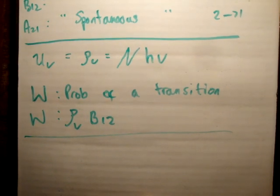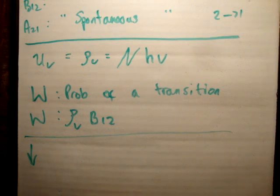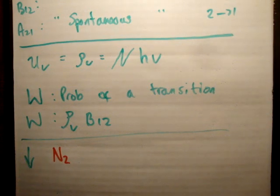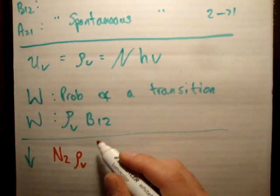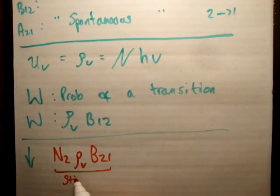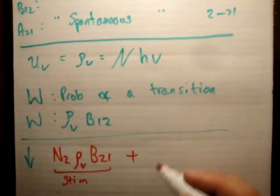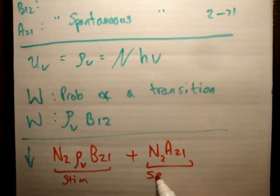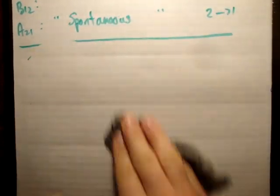Let's look at what is the downward transition rate from energy level 2 to energy level 1. It's definitely going to involve the population density in energy level 2. If we look at the stimulated emission of photons, it's going to involve the energy density and the probability of a photon being emitted going from level 2 to level 1 — that is the stimulated part. We also need to account for the spontaneous, which is going to be N2 times A21. That's pretty straightforward and should be quite intuitive.